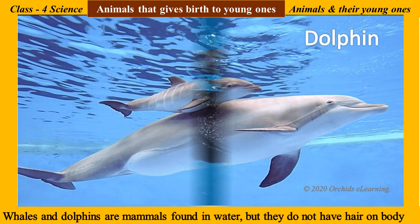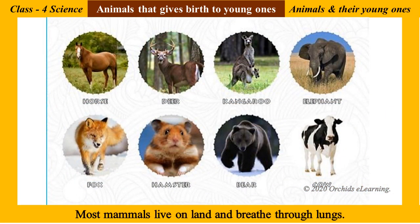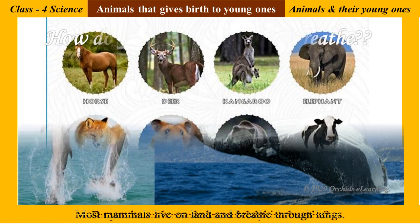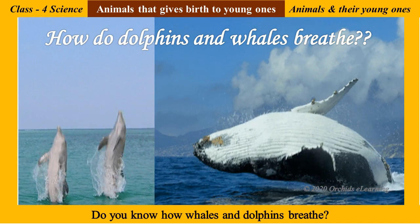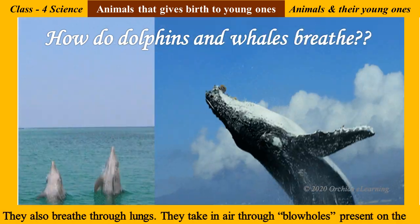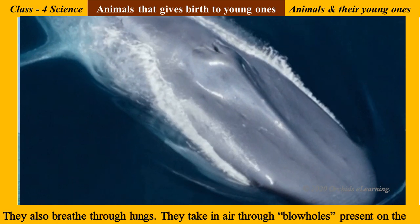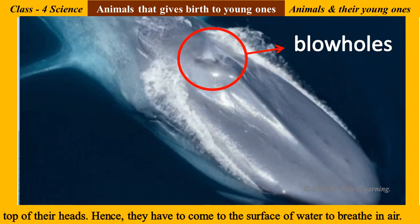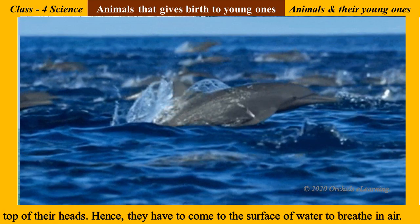Whales and dolphins are mammals found in water, but they do not have hair on their body. Most mammals live on land and breathe through the lungs. Whales and dolphins also breathe through the lungs — they take in air through blowholes present on the top of their heads, so they have to come to the surface of the water to breathe in air.